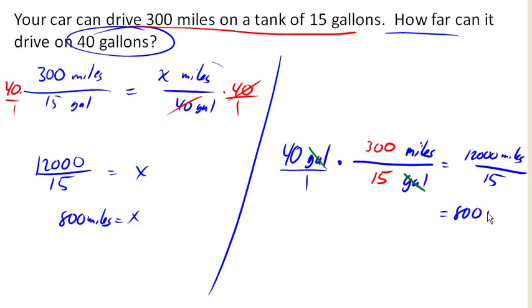And so these are two different ways to approach exactly the same problem. We could either do it using a proportion equation, like we see here. Or we can do it using sort of dimensional approaches, like we see here.